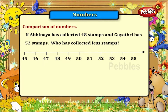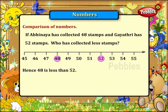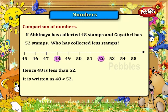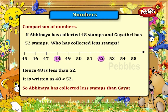On the number line, 48 comes before 52. Hence, 48 is less than 52. It is written as 48 less than 52. So Abhinaya has collected fewer stamps than Gayatri.